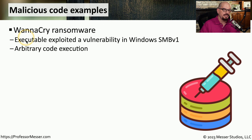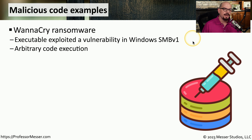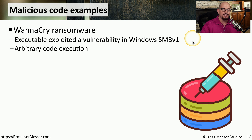Malicious code was used with the WannaCry ransomware attacks to infect devices that were Windows systems that had a vulnerability using SMB, or Server Message Block version 1. This vulnerability allowed for arbitrary code execution, so the attacker could effectively run any software they'd like on a user's machine. This allowed the attacker access into the operating system, and from there they could install additional malware to run the ransomware software.